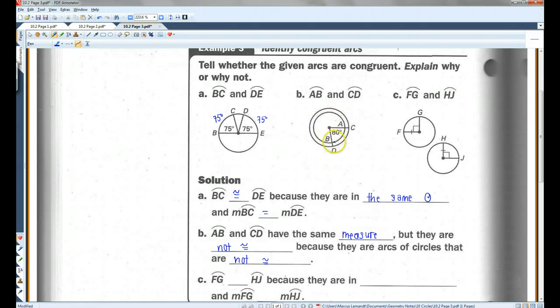You can tell this because this circle is smaller than the bigger circle. So, the circles are not congruent. So, even though they have the same measure, because the circles that they're in are not congruent, the arcs are not congruent.